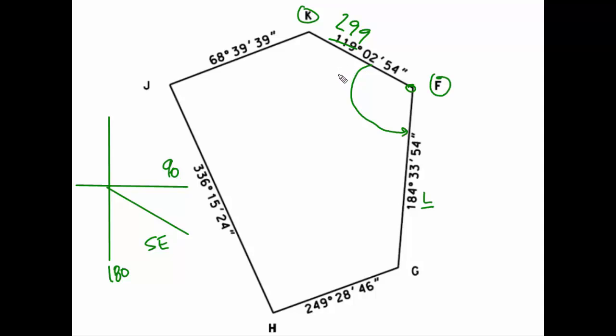So now I can do the math. We have 299 degrees, 2 minutes, 54 seconds. And I'm going to subtract 184, 33, 54. The direction from F to G is expressed as 184. That is going generally in the southerly direction. That azimuth is appropriately oriented for this line. When we compute this difference, we will get 114, 29, 0, 0.